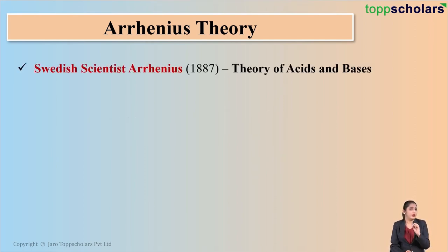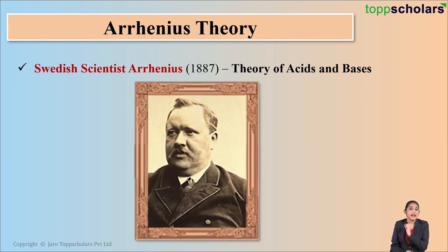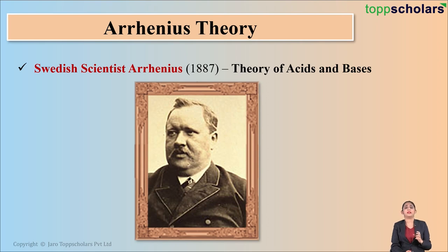Arrhenius was a Swedish scientist who was the one to put forth the theory of acids and bases in the year 1887. What did Arrhenius actually do? Arrhenius theory of acids and bases simply defines acids and bases.